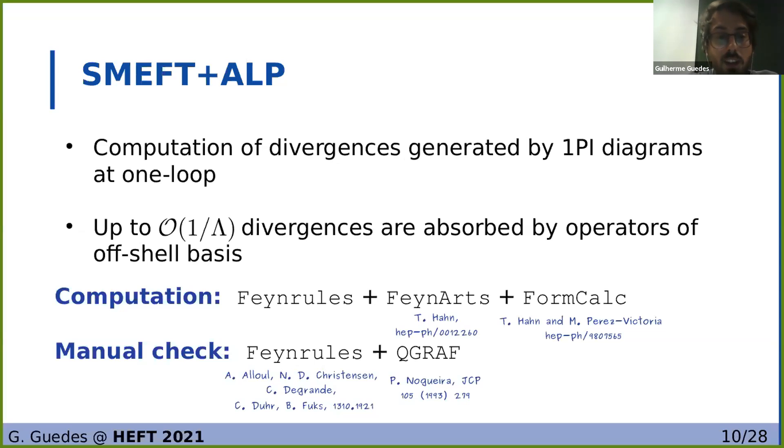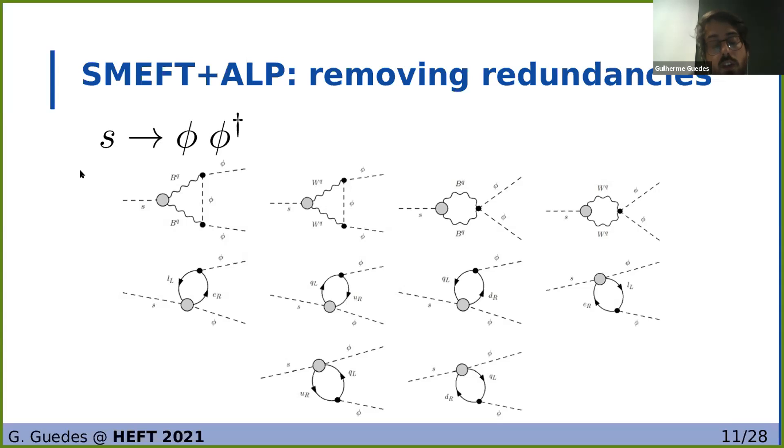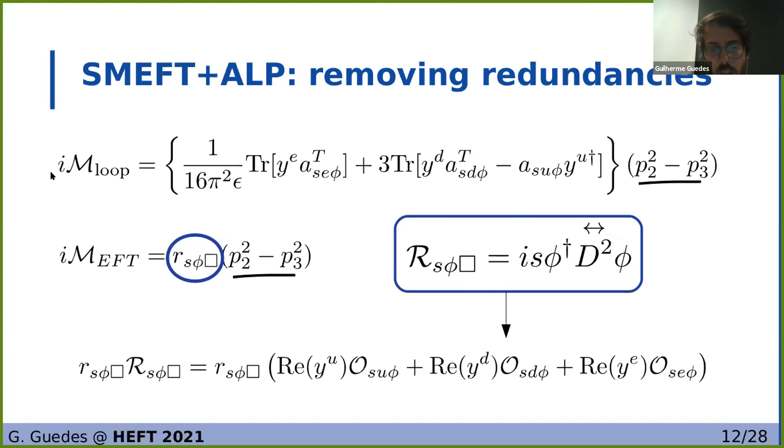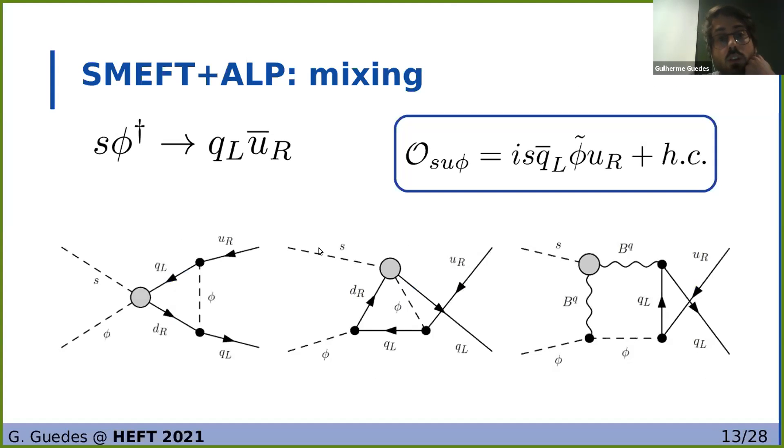So now that the basis is taken care of, we can then go ahead and compute the divergences that are generated at one loop. We'll calculate it with the insertions of one dimension five operators, so we're going to order one over lambda in our calculations. Let me just show you one example, here looking at the process of s going to phi phi dagger in which phi is the Higgs doublet. We see here the diagrams that generate this divergence at one loop with one insertion of a dimension five operator here described by these gray vertices. So this is the divergent amplitude and we will then absorb this divergence with our EFT operators, and in this case this divergence is absorbed by a redundant operator, this Rs phi box, and so we need to use the equations of motion to turn it into contributions to the non-redundant basis, and in this case we're going to get contributions to the Yukawa-like operators.